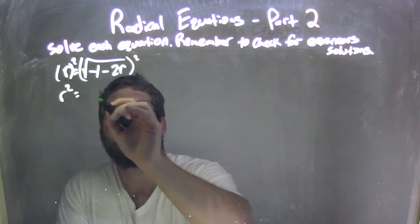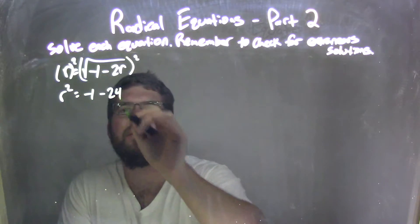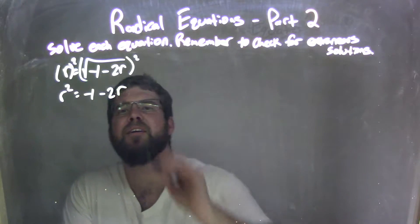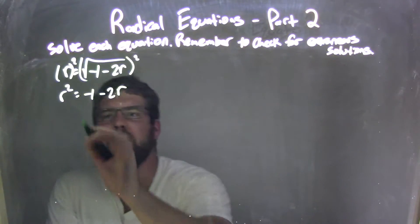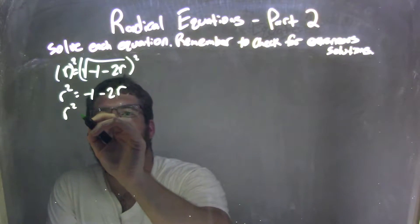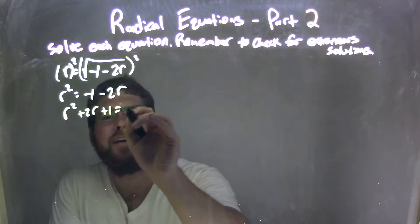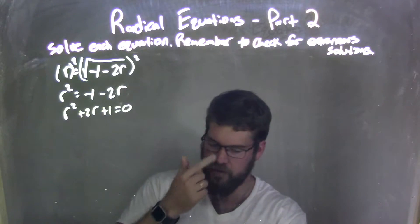So we have r squared here equals negative 1 minus 2r. I'm going to bring everything over to the left-hand side, leaving me with r squared plus 2r plus 1 equals 0.